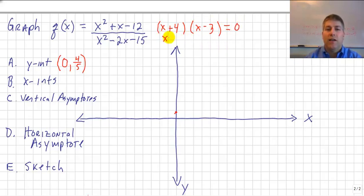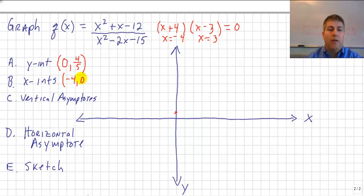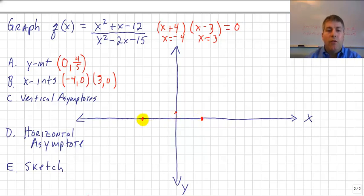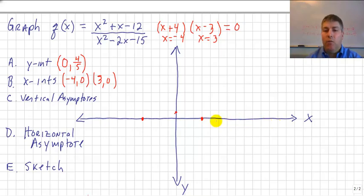Setting each factor equal to 0 and solving, we find x equals negative 4 and x equals 3. Those are the values that make our fraction 0, so our x-intercepts are (−4, 0) and (3, 0). We plot those points. Those are our only routes across the x-axis — our graph has to cross at these two points and cannot cross anywhere else.